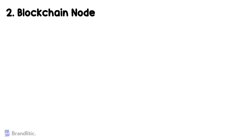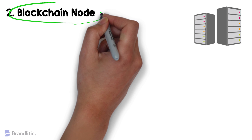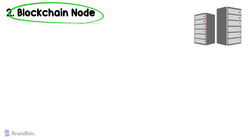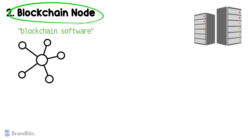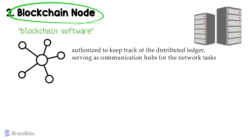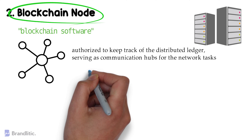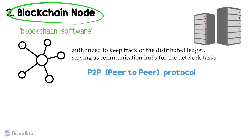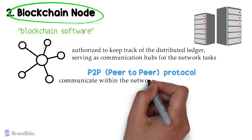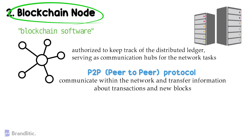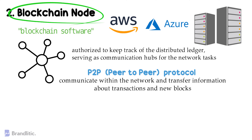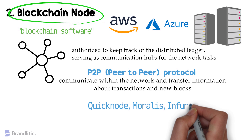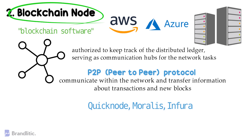Tech stack component #2: Blockchain Nodes. For deploying an application in production, you need a server — a blockchain node does this job for blockchains. Blockchain nodes are network stakeholders or devices running the blockchain software, authorized to keep track of distributed ledgers and serve as communication hubs. A P2P protocol allows nodes to communicate and transfer information about transactions and new blocks. You can self-run a blockchain node using AWS or Azure, or get one from service providers like Quicknode, Moralis, or Infura, which offer APIs to create automated flows.